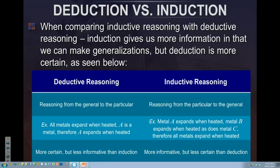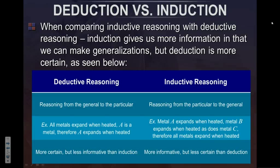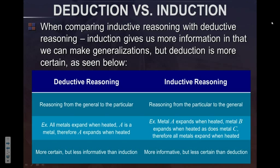On the deductive side, we use syllogisms: 'all metals expand when heated; A is a metal; therefore A expands when heated.' Here I took a general statement and moved to a particular statement. Which gives you more certainty? Some argue deductive reasoning gives more certainty and seems more logical, while inductive reasoning is a little too vague. But maybe you noticed something — in order for deductive reasoning to work, we had to start with an inductive premise.